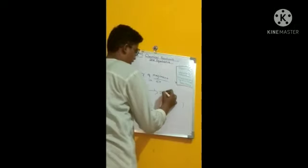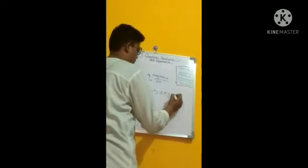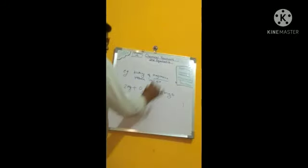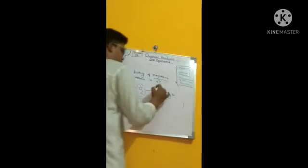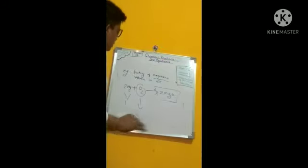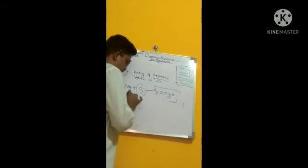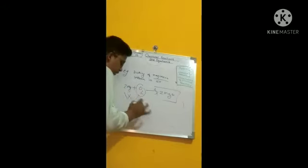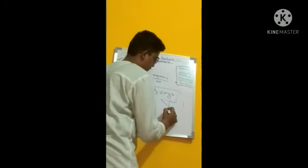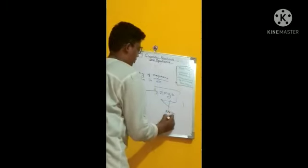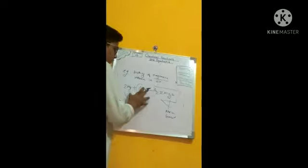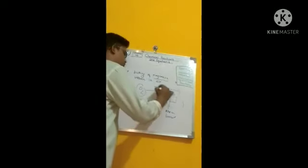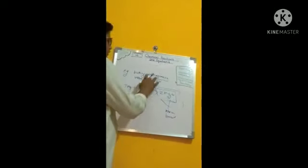2Mg plus O2 gives magnesium oxide. There is one substance — magnesium — and a second substance — oxygen — and we get a new substance: magnesium oxide. Magnesium and oxygen mixed up and made a chemical bond; they broke their own chemical bonds to form a new chemical bond called magnesium oxide. This is called a chemical reaction.